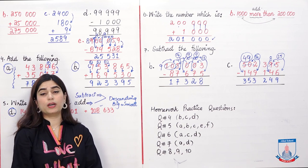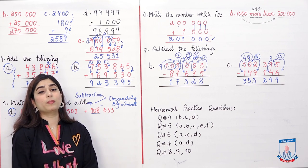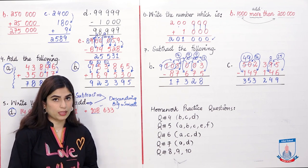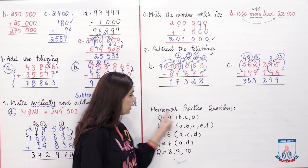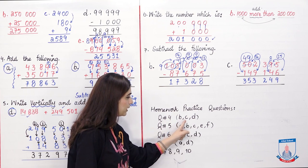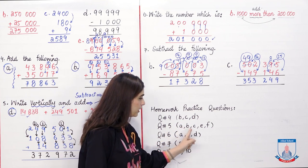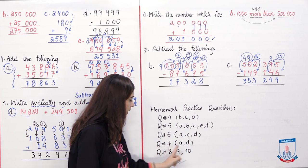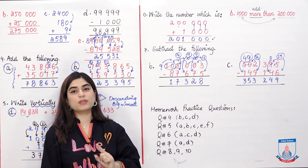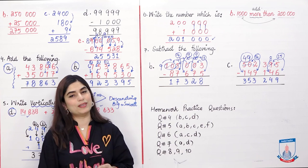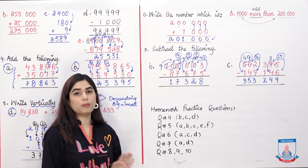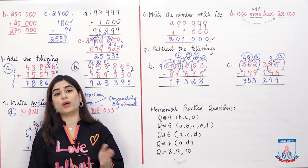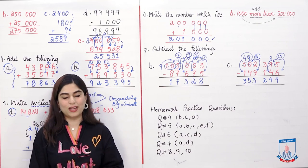Today's lesson on Exercise 1B is complete. Homework: Question 4 parts B, C, D; Question 5 parts A, B, C, E, F; Question 6 parts A, C, D; Question 7 parts A and D; Questions 8, 9, and 10 complete. Word problems are not included — we will do those together in the next video lesson. Take care, see you in the next video where we will do Exercise 1B word problems. Allah Hafiz.